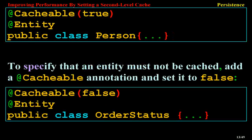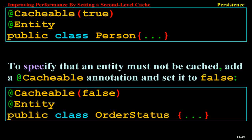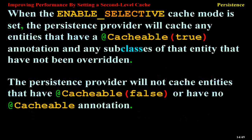To specify that an entity must not be cached, add a @Cacheable annotation and set it to false: @Cacheable(false) @Entity public class OrderStatus.